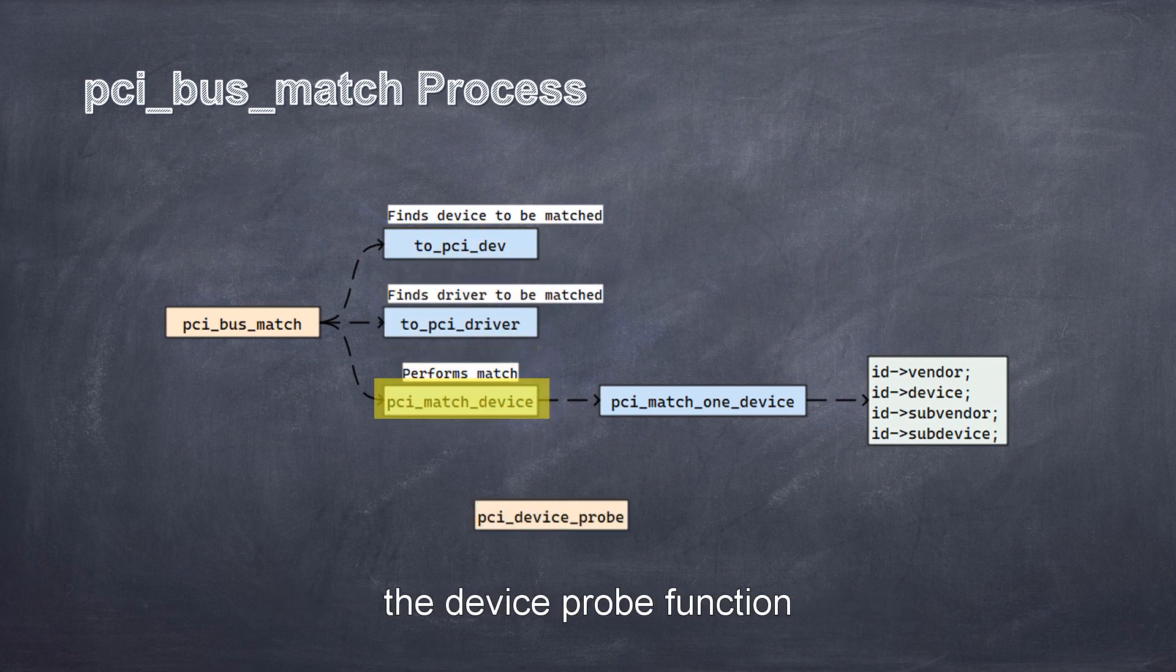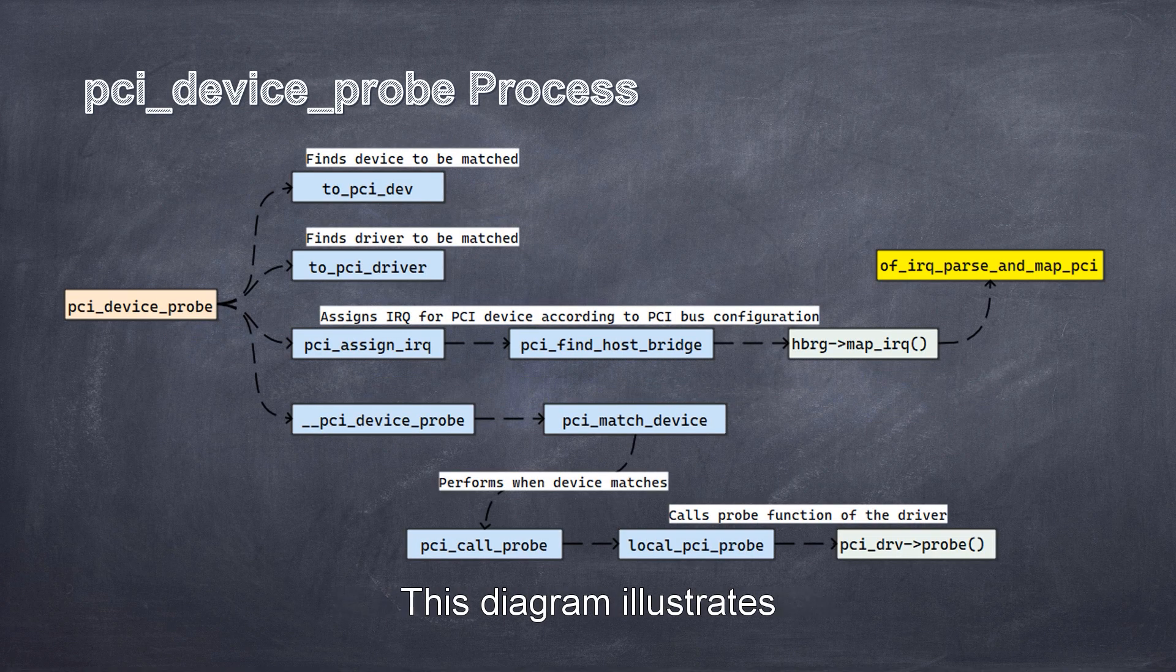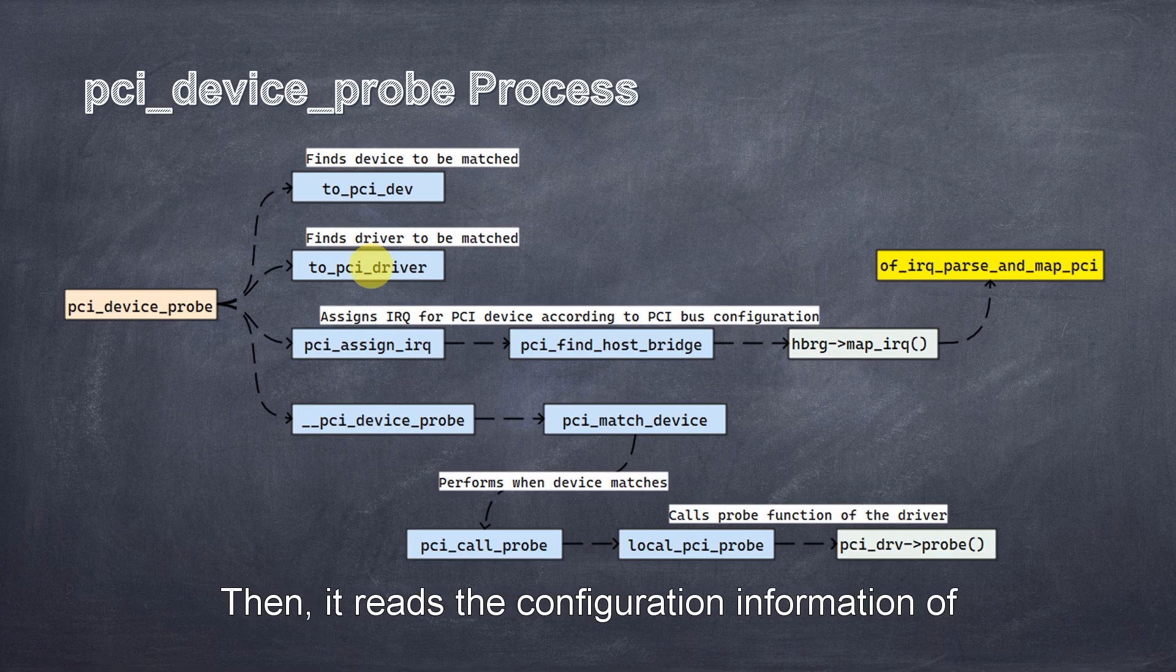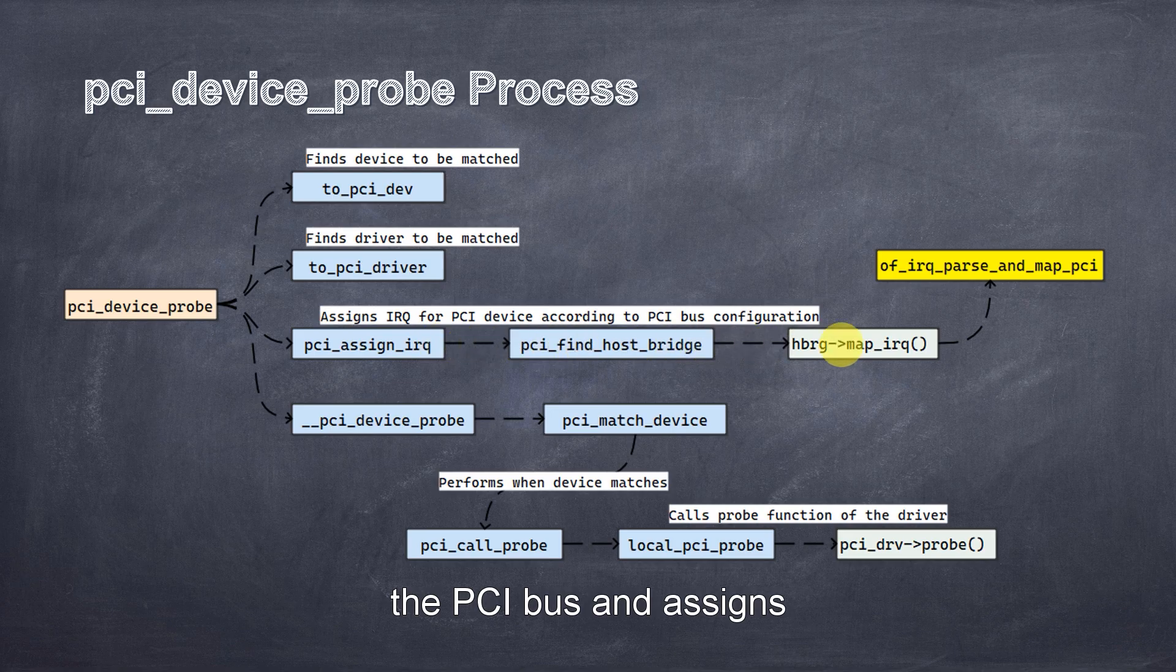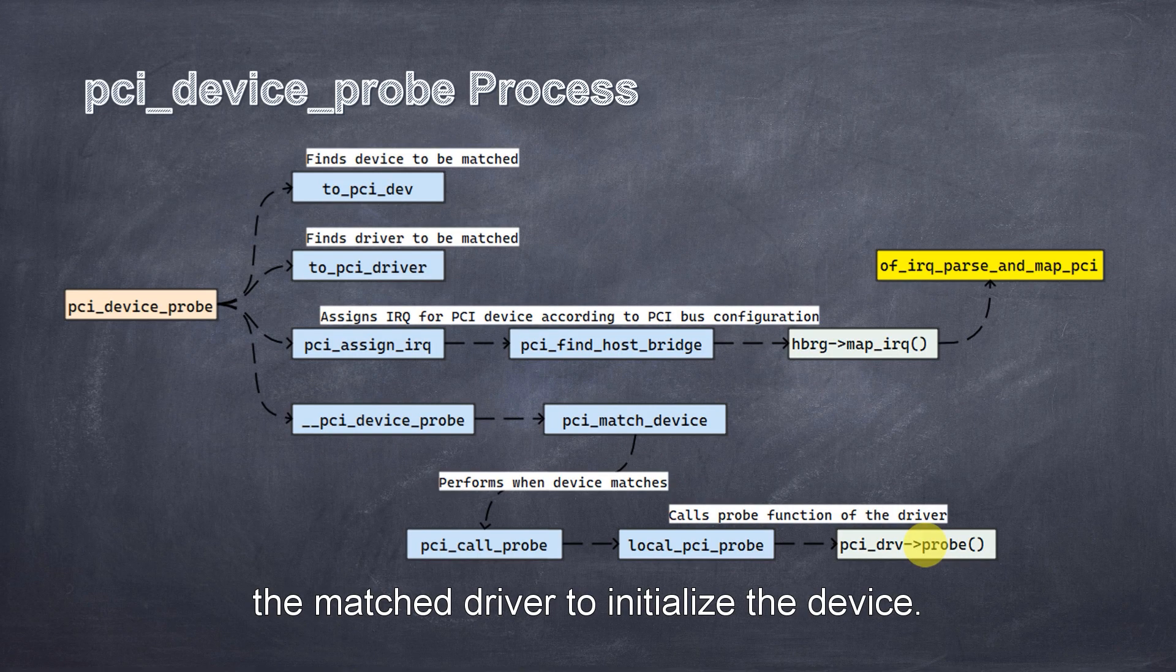This diagram illustrates the probe function process. First, the function finds the device and driver to be matched. Then, it reads the configuration information of the PCI bus and assigns an interrupt request number or IRQ number to the device. Finally, it calls the probe function written in the matched driver to initialize the device.